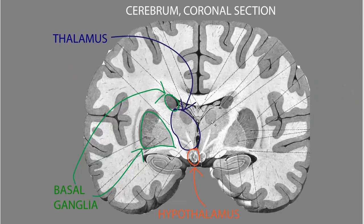Some of the subcortical nuclei deep in the cerebrum are grouped together into more complex structures. This includes particularly important nuclear groups: the thalamus, the hypothalamus just beneath the thalamus, and a collection called the basal ganglia — which is actually a misnomer, because ganglia is the term for collections of neuronal soma in the peripheral nervous system. These are actually nuclei, but the name has stuck.